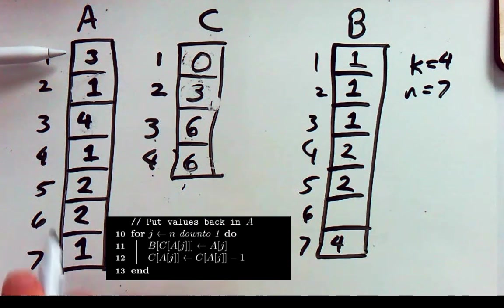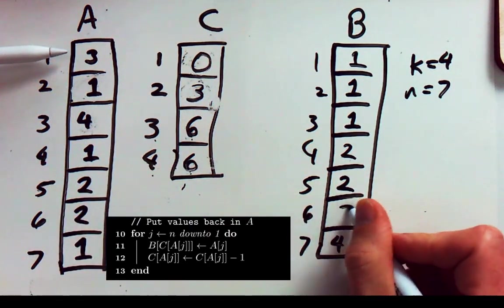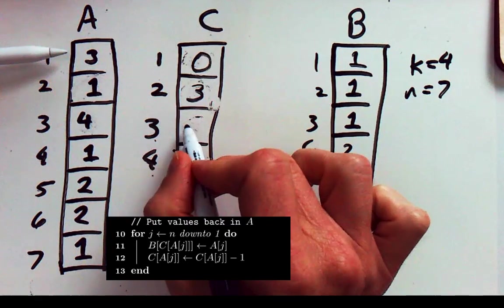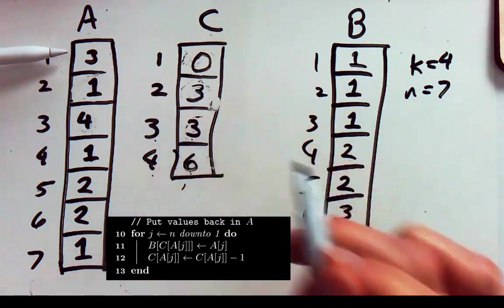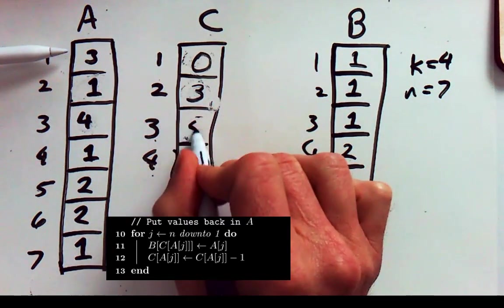And then our last value, 3. We look that up. 3 belongs in box 6. We put that out there. We update our counter. And we're done.